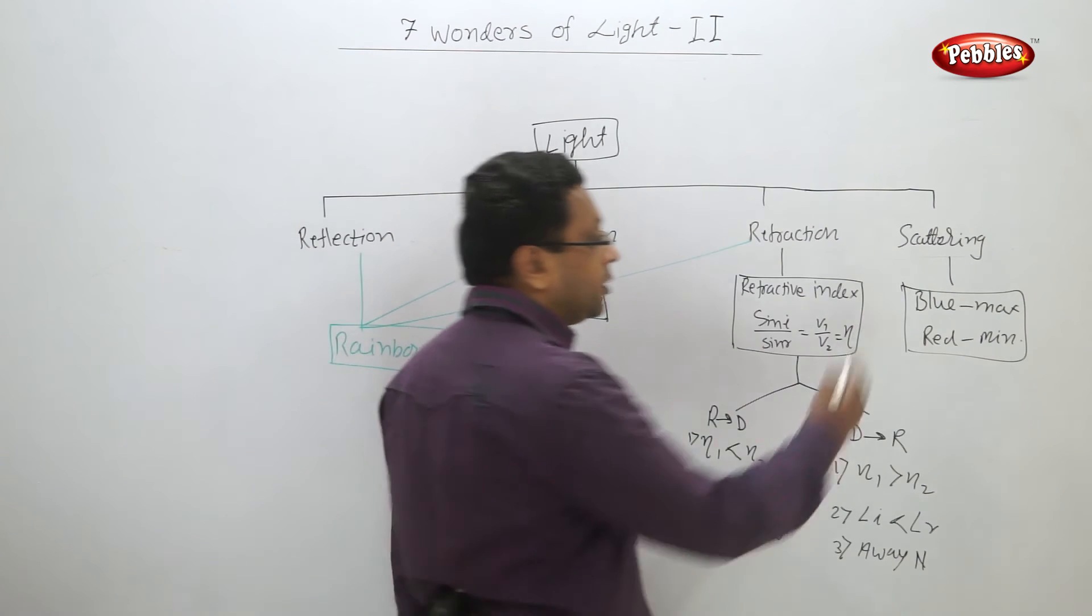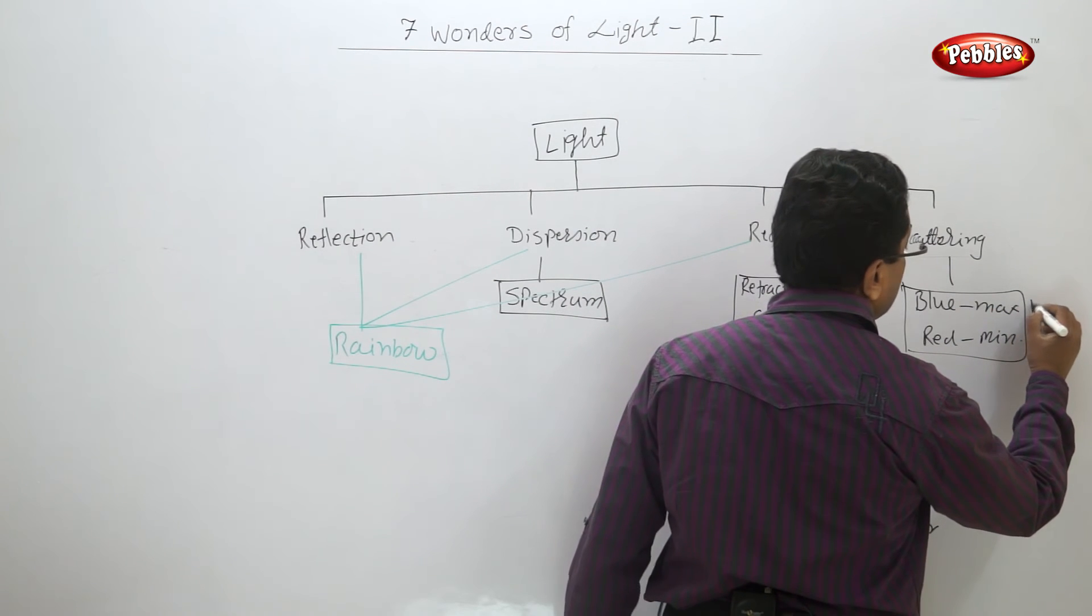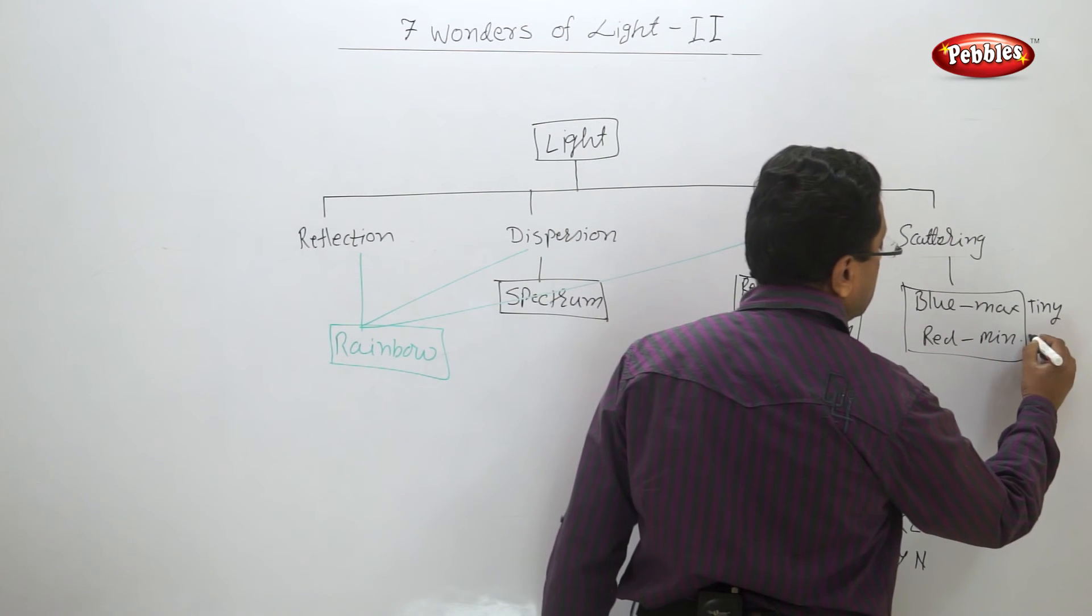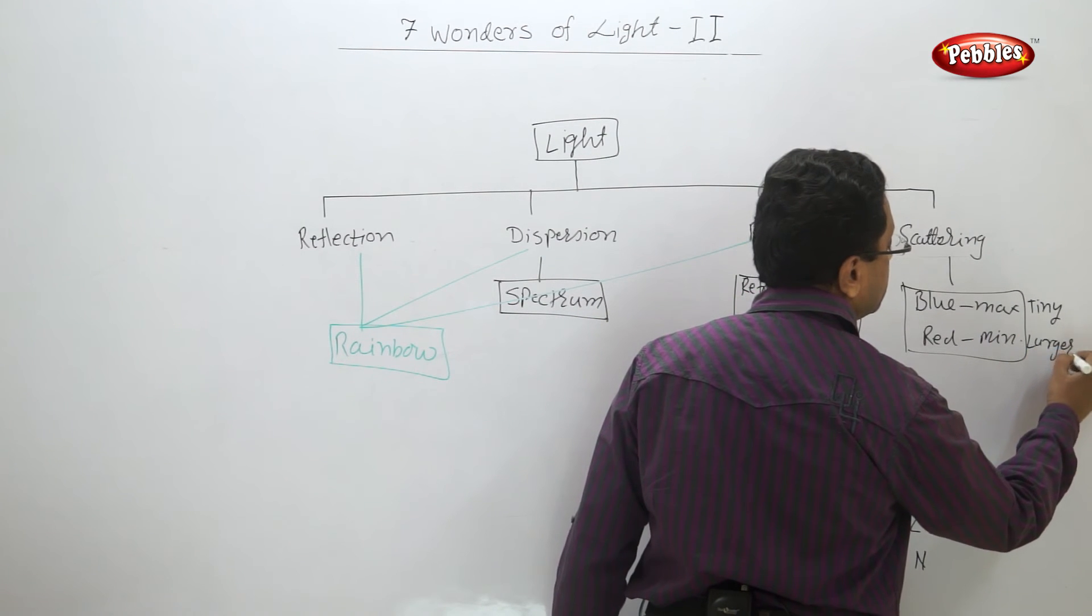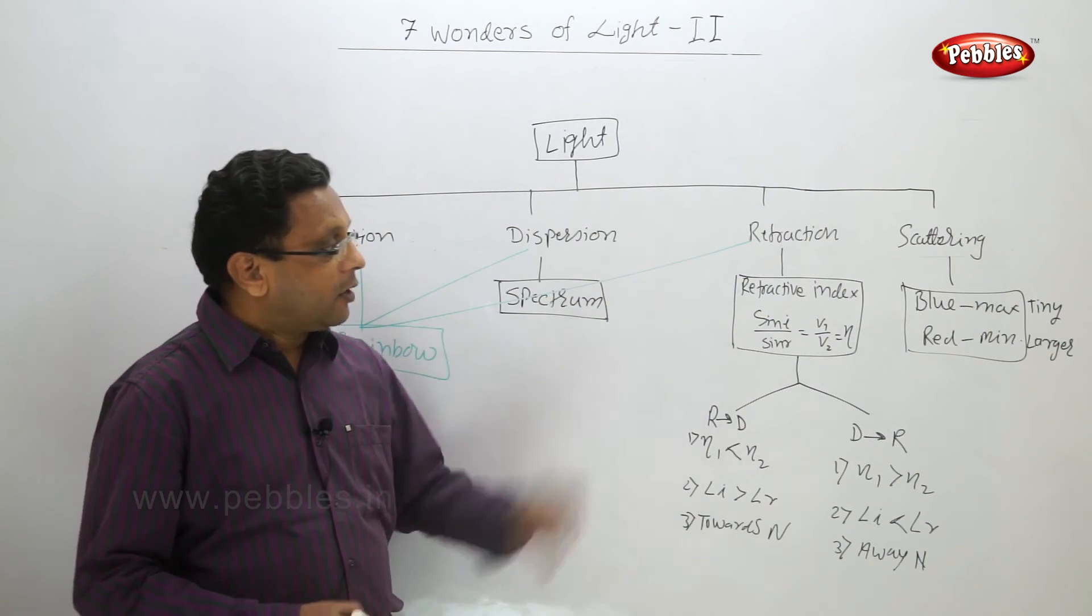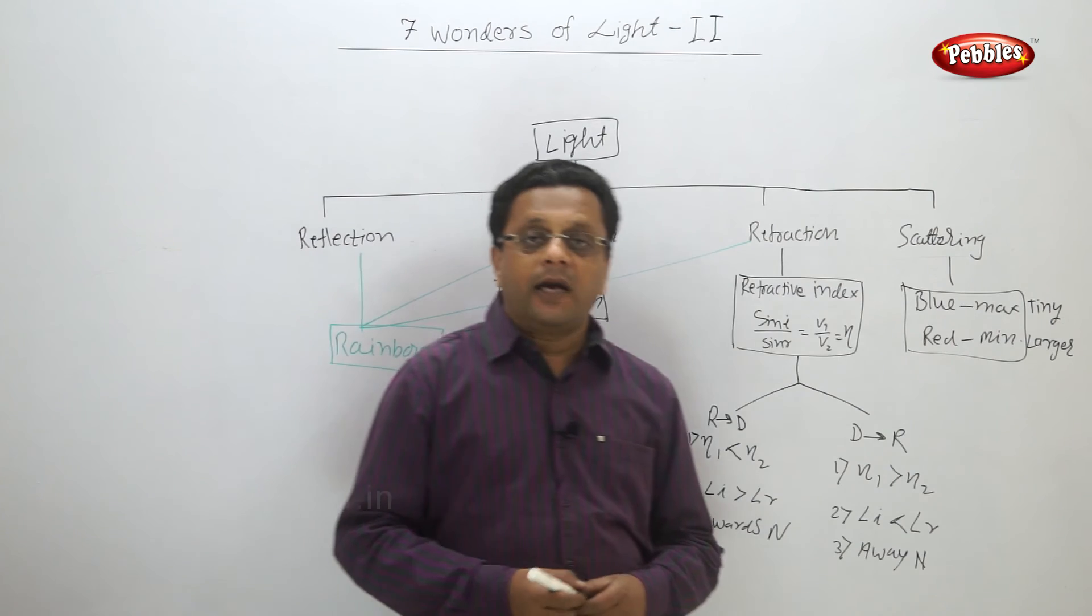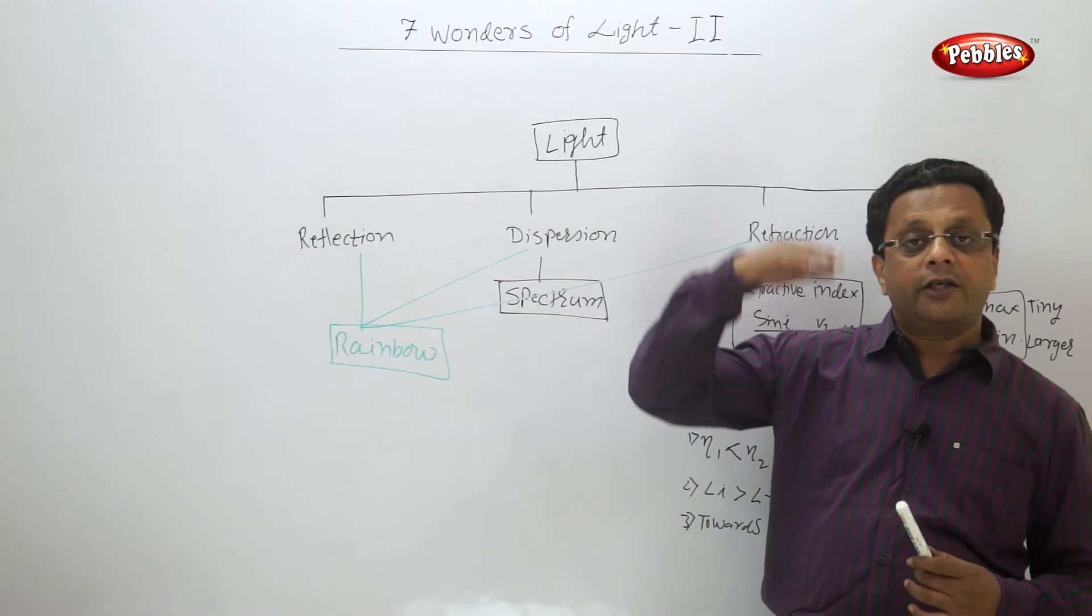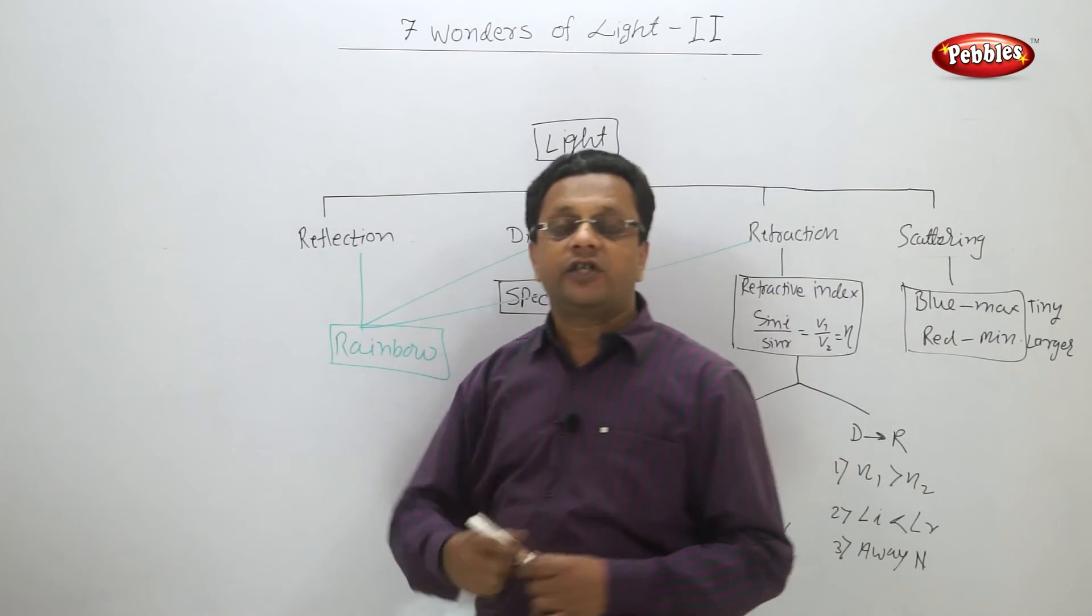Now one more point here is the blue light is for tiny particles and red is for larger particles. And we have again seen why at the time of sunrise and sunset we see red, orange, and yellow sky - these shades. Why we see that?